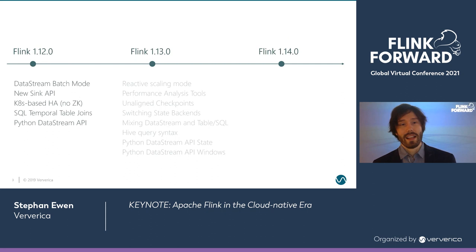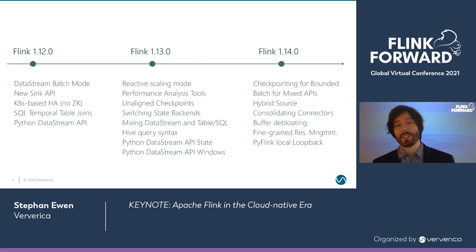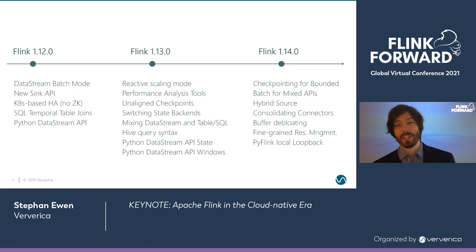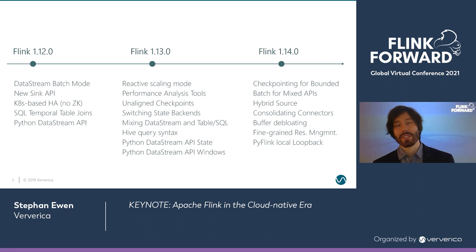Over the last months, this community has created three big releases since we last met at a virtual Flink Forward conference at the end of last year. Over these releases, there was a lot of really cool stuff that went into Flink: a lot of progress around unified batch and streaming, streaming SQL, change data capture, materialized view support, a lot of progress on Flink for Python users, and a lot of work on the fabric that powers Flink — the batching and streaming runtimes, network stack, and distributed coordination.